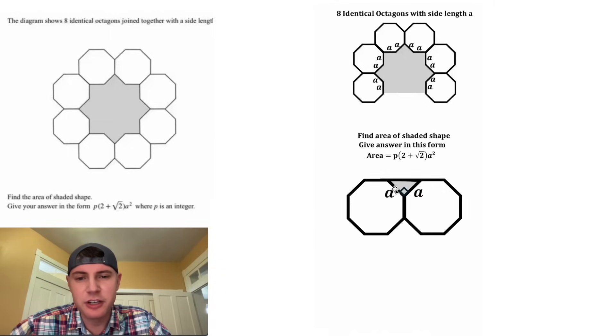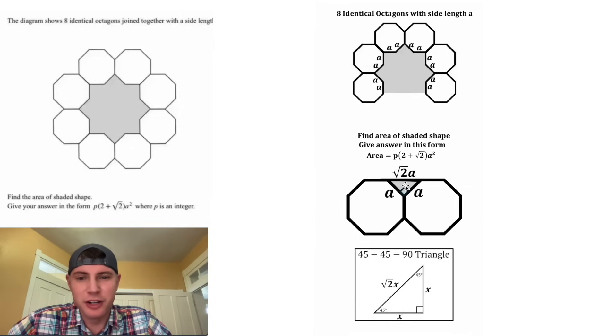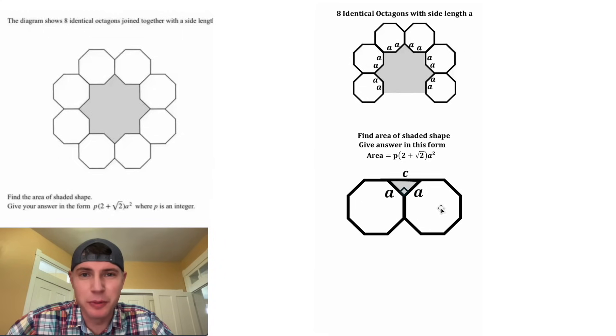We were given that these are equal to A, but we don't know the length of this side C. In a 45-45-90 triangle, the hypotenuse is always square root of 2 times the two side lengths. But in case you didn't know that, we can still do the Pythagorean theorem.